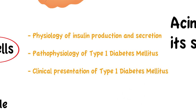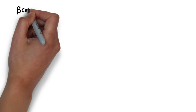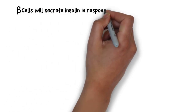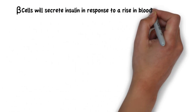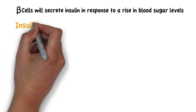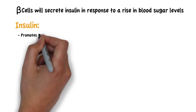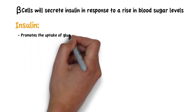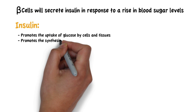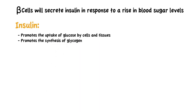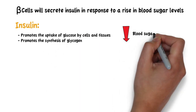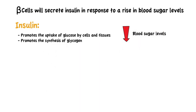In normal physiology, beta cells will secrete insulin in response to a rise in blood sugar levels, as insulin acts to promote the uptake of glucose by cells in tissues and the synthesis of glycogen, both of which will reduce blood sugar levels.